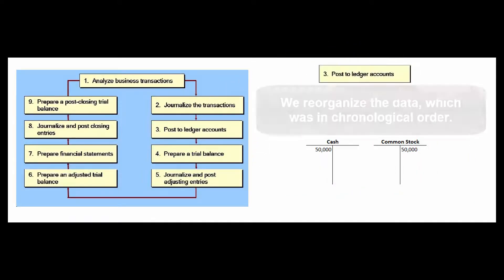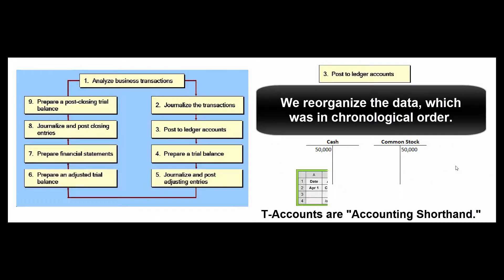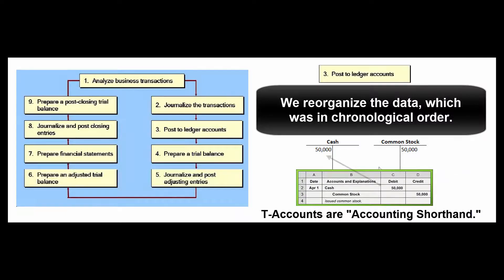Step three: we post or copy all the journal entries to individual ledger accounts. Once we've done the journal entries and have everything in chronological order, we reorganize it by account. In accounting class and in the real world, we often use T-accounts to symbolize the ledger accounts. For example, after the last transaction we have a cash balance of fifty thousand and a credit balance for common stock of fifty thousand dollars.